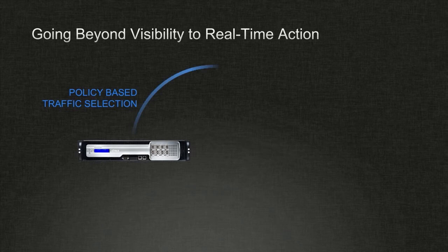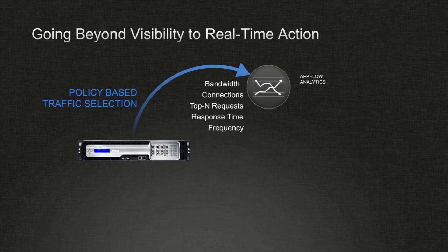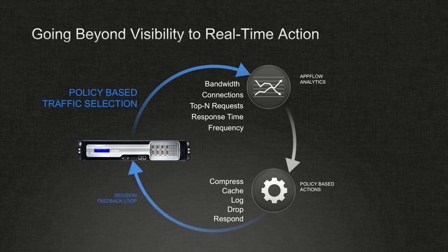One last thing we found as this got into the field with a lot of deployments: in addition to getting visibility, you can now use that information — which is metrics — to take real-time policies such as compress, log, or drop, in real time based on the data emanating from that load balancer. From our deployments, you can actually do rate limiting in real time based on not just the load, but a various set of metrics associated with it.